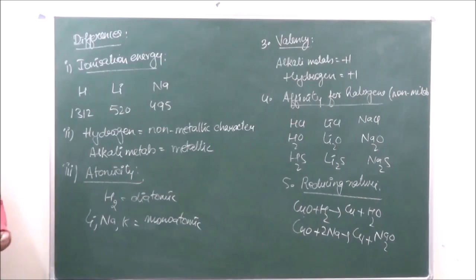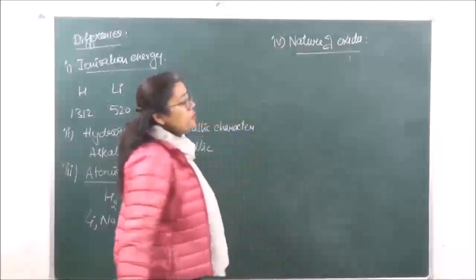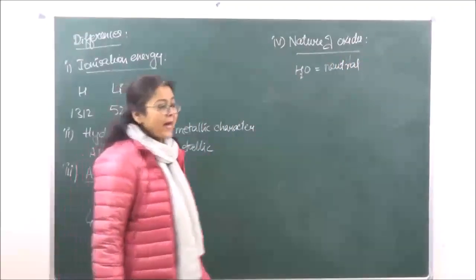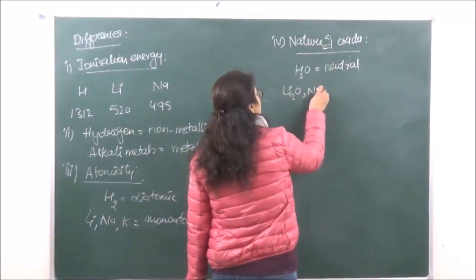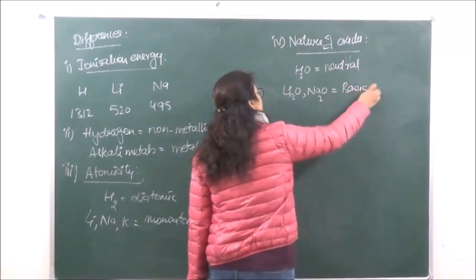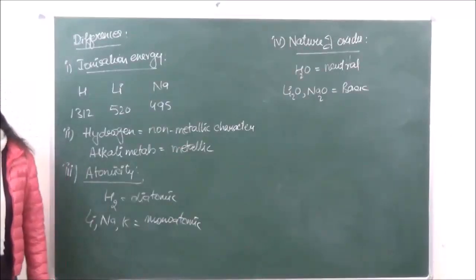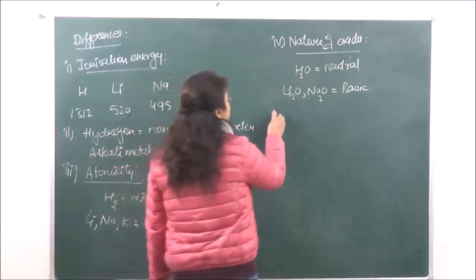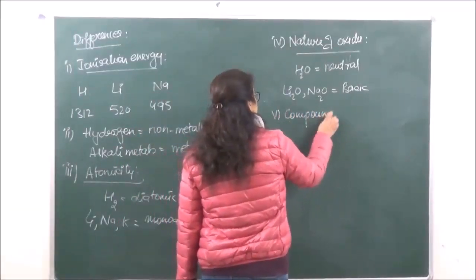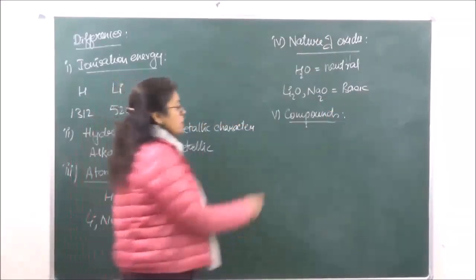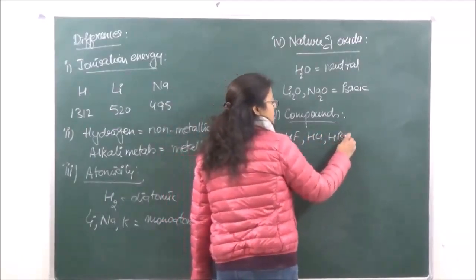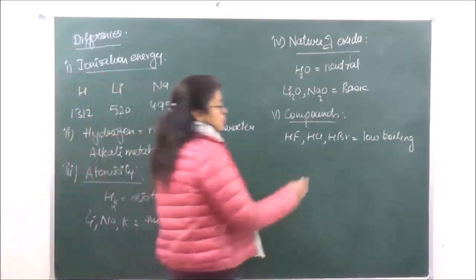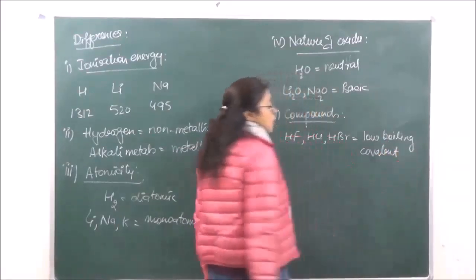The fourth difference is the nature of oxides. The oxide of hydrogen — that is water — is neutral in nature, whereas the oxides of alkali metals are basic in nature. The fifth difference is that the compounds of hydrogen, especially with halogens — HF, HCl, HBr — are low boiling covalent compounds.